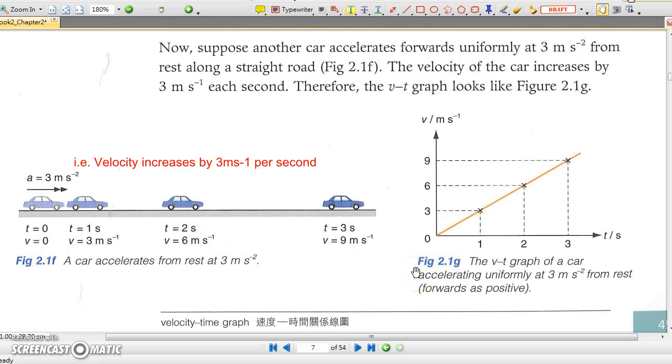we can see its velocity increases from 0 to 3 to 6 to 9 in consecutive 3 seconds. And what if the car has a speed of 1.5 m/s before it starts to accelerate at the same acceleration, 3 m/s²? Can you also draw the graph?